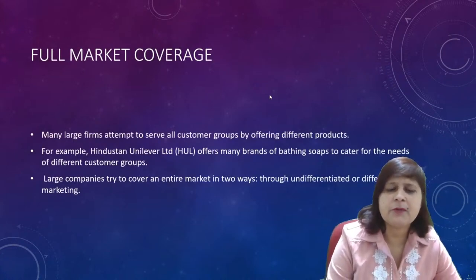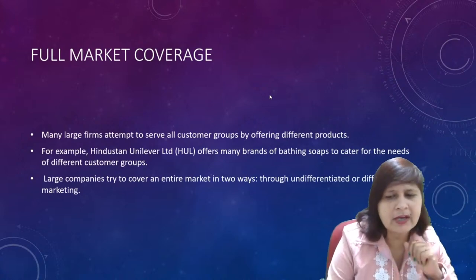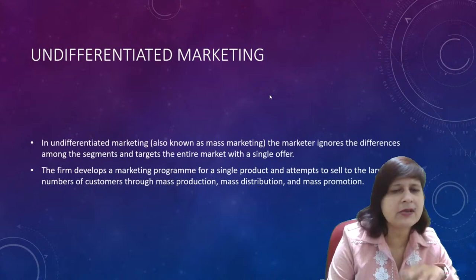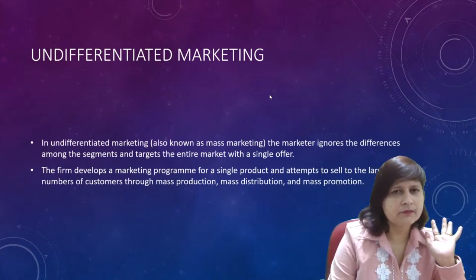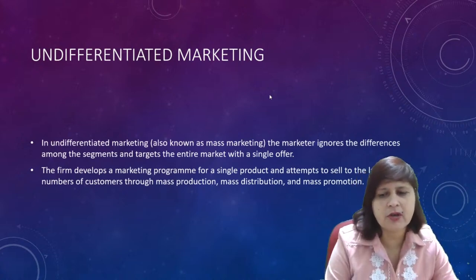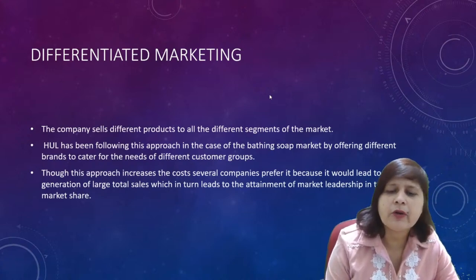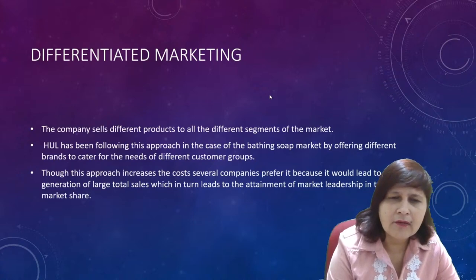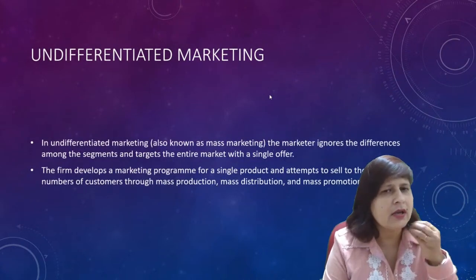Undifferentiated marketing is when the marketer ignores differences among segments and treats the entire market with a single offer, developing a marketing program for a single product and reaching the largest number of customers through mass production and distribution. Differentiated marketing is when a company sells different products to different market segments — for example, soap brands like Lux and Dove for beauty, and Lifebuoy and Rexona for the masses.